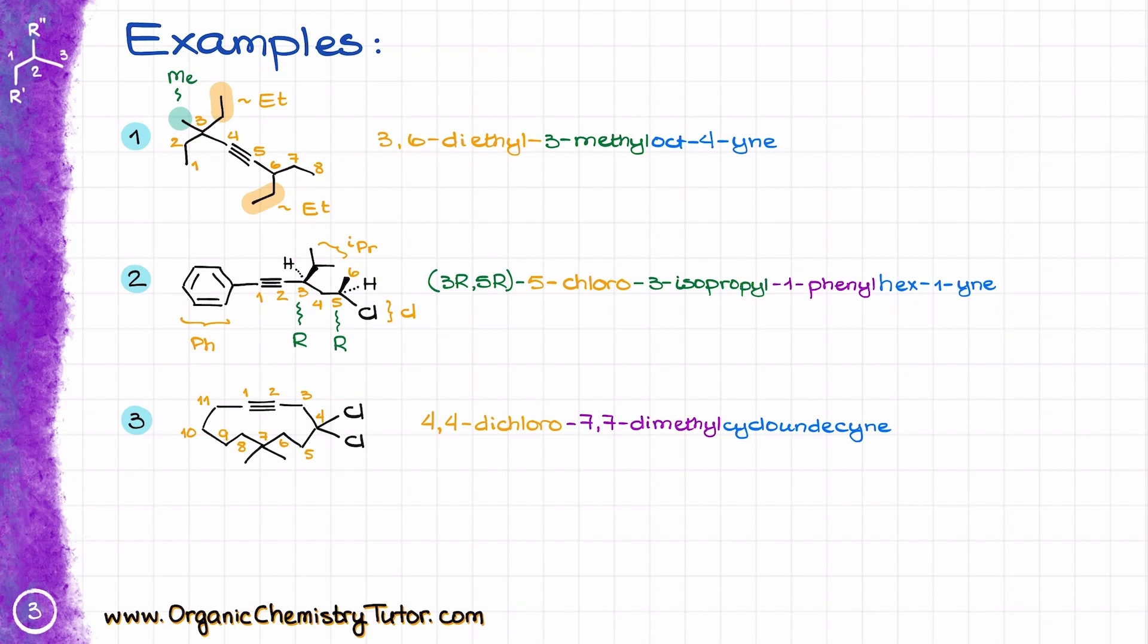And the final name for this molecule is going to be 4,4-dichloro-7,7-dimethyl-undecyne. Notice, I'm not specifying where my triple bond is in this case. Since in this cyclic molecule, the numbering will have to start from the triple bond anyways, saying the atom where the triple bond is going to be is redundant, so we're not going to do it. Also, this molecule doesn't have any stereochemistry whatsoever, so there is nothing to name from that perspective either.